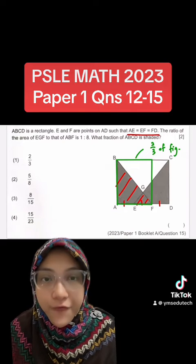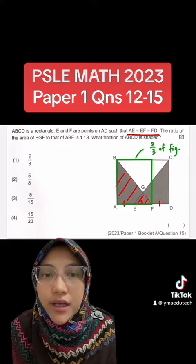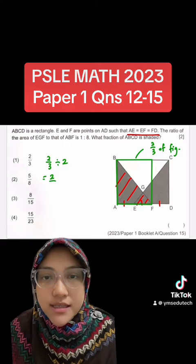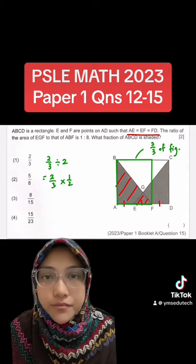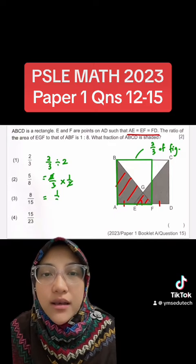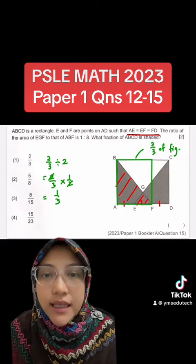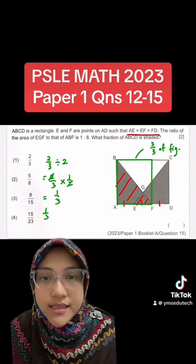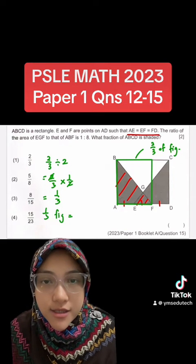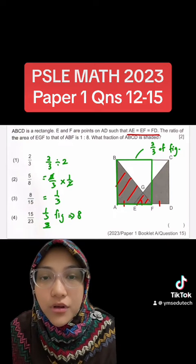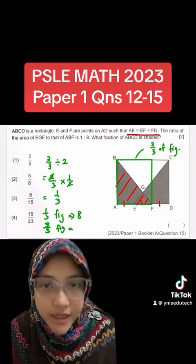And half of the green rectangle is triangle ABF. We're going to divide 2 third by 2. That gives us 1 third. This means ABF is 1 third of rectangle ABCD. And 1 third of the figure is 8 units. Therefore, the whole figure consists of 24 units.